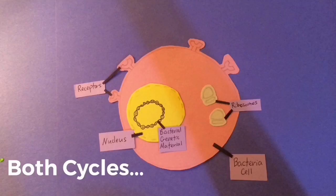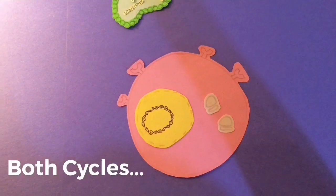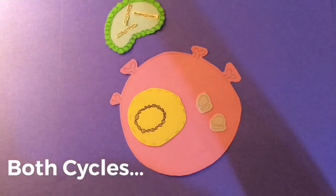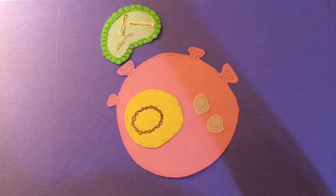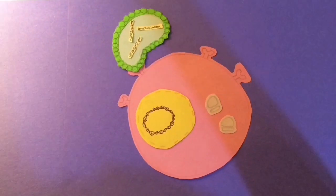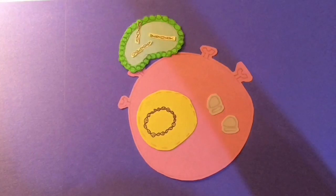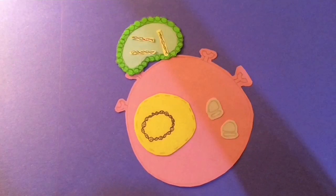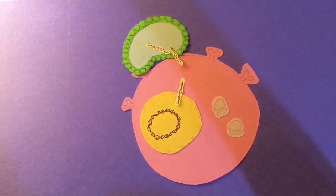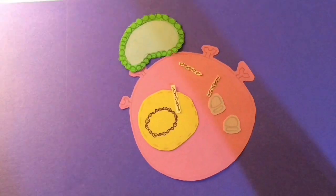Both cycles begin when the virus attaches to a cell's receptor. By the way, viruses are super picky about their host because of this, and it's not just a phage. The virus then injects its genetic information inside, or if it has a membrane, tricks the host into eating it or fuses with the host.